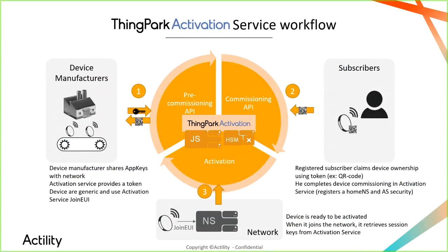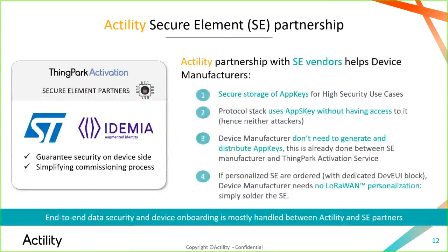What we advise for transporting this type of information is the use of QR codes — an easy way to transport this one-off token from device manufacturer to subscribers. In the third step, of course, you activate your device on the network. Actility will interconnect this activation service with all major network server suppliers, enabling activation away from home.